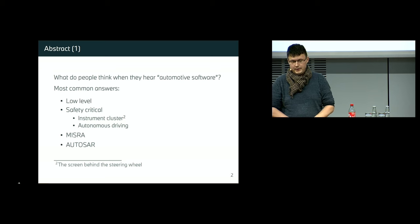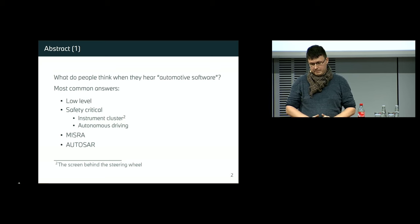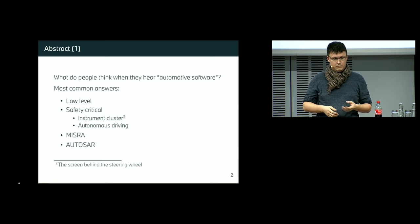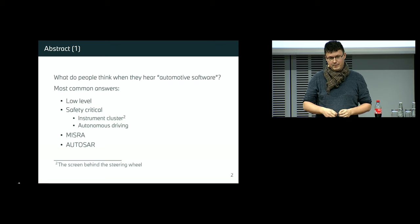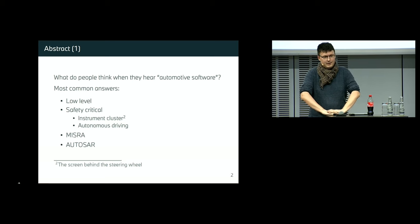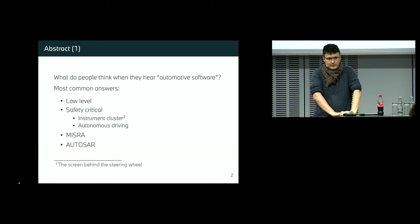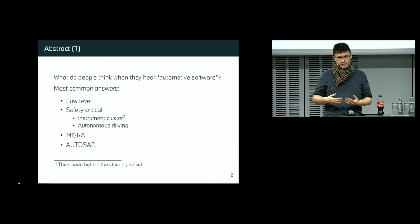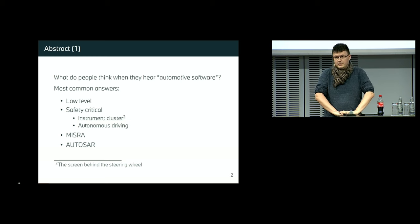Why are we here and what is this all about? When people hear about automotive software, they usually think of something low level, like controllers, bytes and so on, or something safety critical like the instrument cluster — what you see behind your steering wheel — or the autonomous driving stack. This point of view is reinforced by different talks and conferences where people talk about the MISRA standard, AUTOSAR, and other scary words.